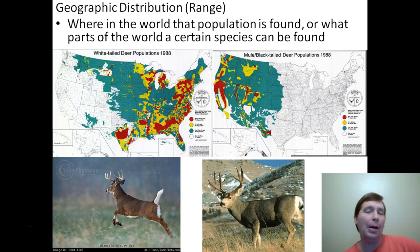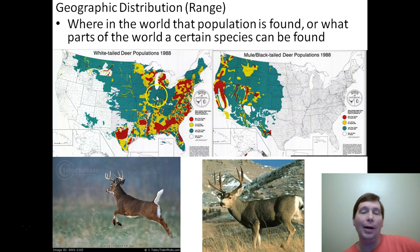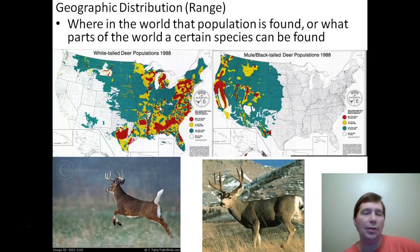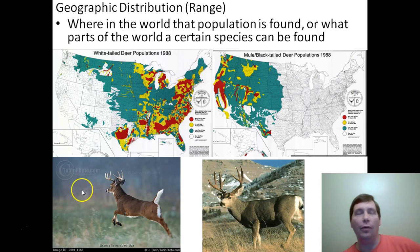The reason we care about the range of a species is it gives us an idea of what might happen to the population. If there's a massive fire in the western United States, we can expect mule deer populations to be hurt. White-tailed deer won't be affected nearly as much because they mainly live in the eastern United States. The range tells us where on earth you can find a species and what's going to happen to a population based on climate and conditions of that area.